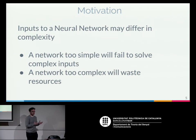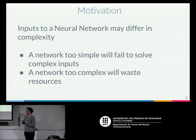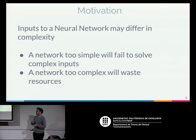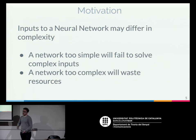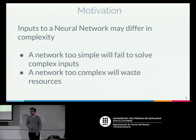In neural networks, the difficulty of solving an input can change a lot from the size of that input. A too-simple neural network would have problems solving inputs that are too complex, and a too-complex neural network will waste resources on very simple inputs. Another problem with too-complex neural networks is that they are more prone to overfitting.